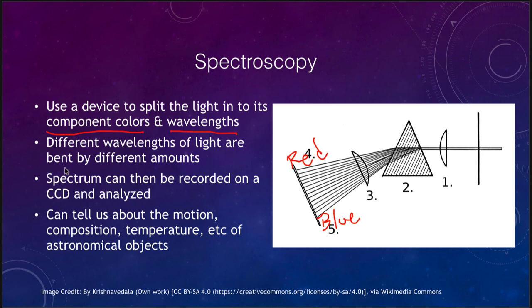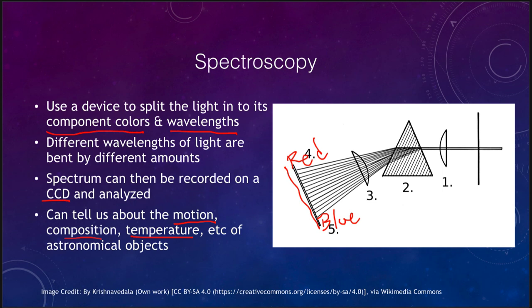Different wavelengths are bent by different amounts. We can place a detector — historically a photographic plate, now a CCD — at the output to record and analyze the spectrum. This is very important because it tells us about the motion of an object, what it is made up of, what its temperature is, and much more. Pictures from photographic plates and CCDs give us very nice images, but the spectroscope is really where we learn the details about astronomical objects.